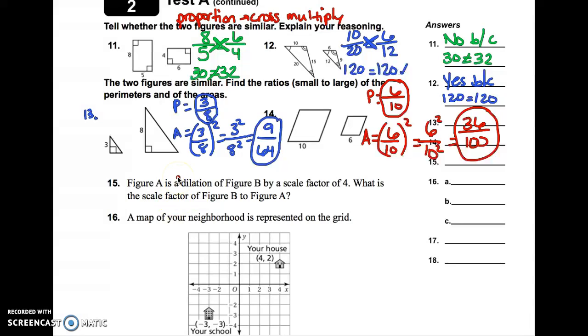Now, moving on to number 15. This is one that we haven't really talked about much in class, but it's a very simple process. It says, figure A is a dilation of figure B by a scale factor of 4. So, it got bigger. It got 4 times bigger. What is the scale factor of figure B to figure A? So, you're basically going backwards. And I want you to make this little note. To go backwards, all you have to do is flip the fraction. So, the scale factor that they gave us was 4 as a fraction. That's 4 over 1. So, flip it, you get 1 fourth, and that's your answer. It is as simple as that.